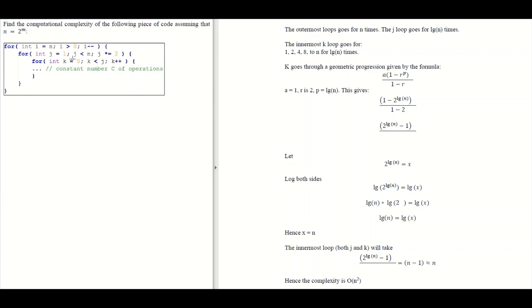The third innermost loop is the tricky one because the value of k depends on the value of j. It is very difficult to find out what k should be by induction alone. What you normally do in such a case is look at the loop that comes before it — the j loop — and unroll these two loops together.